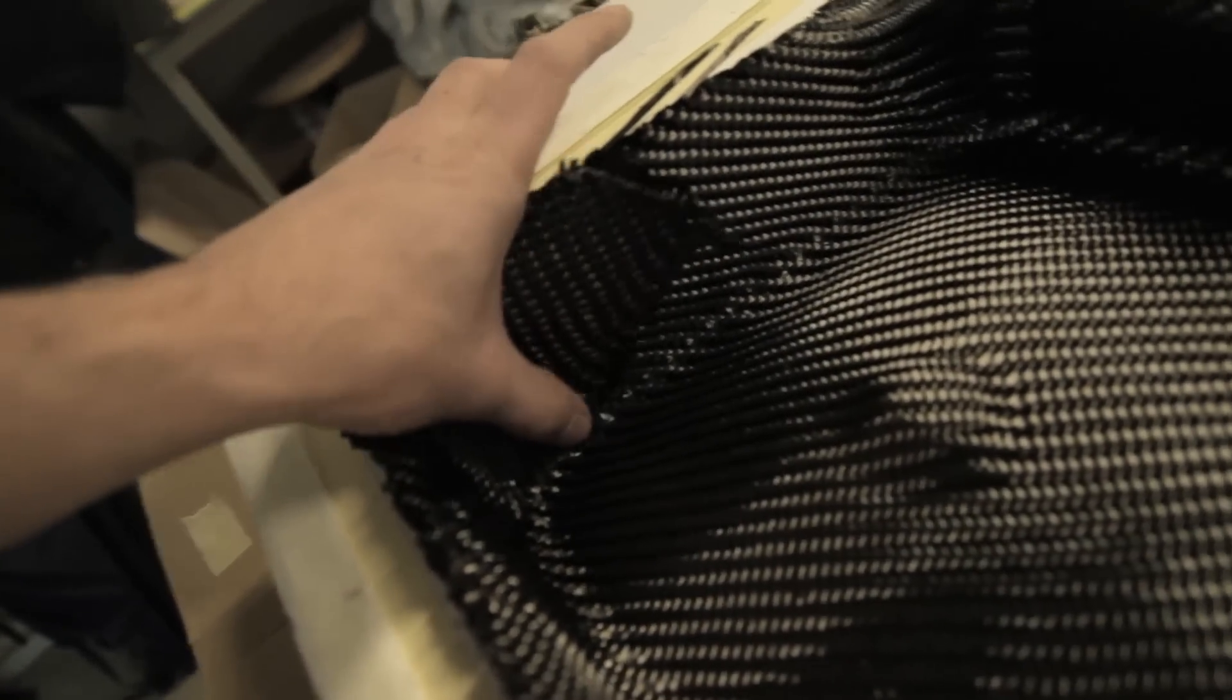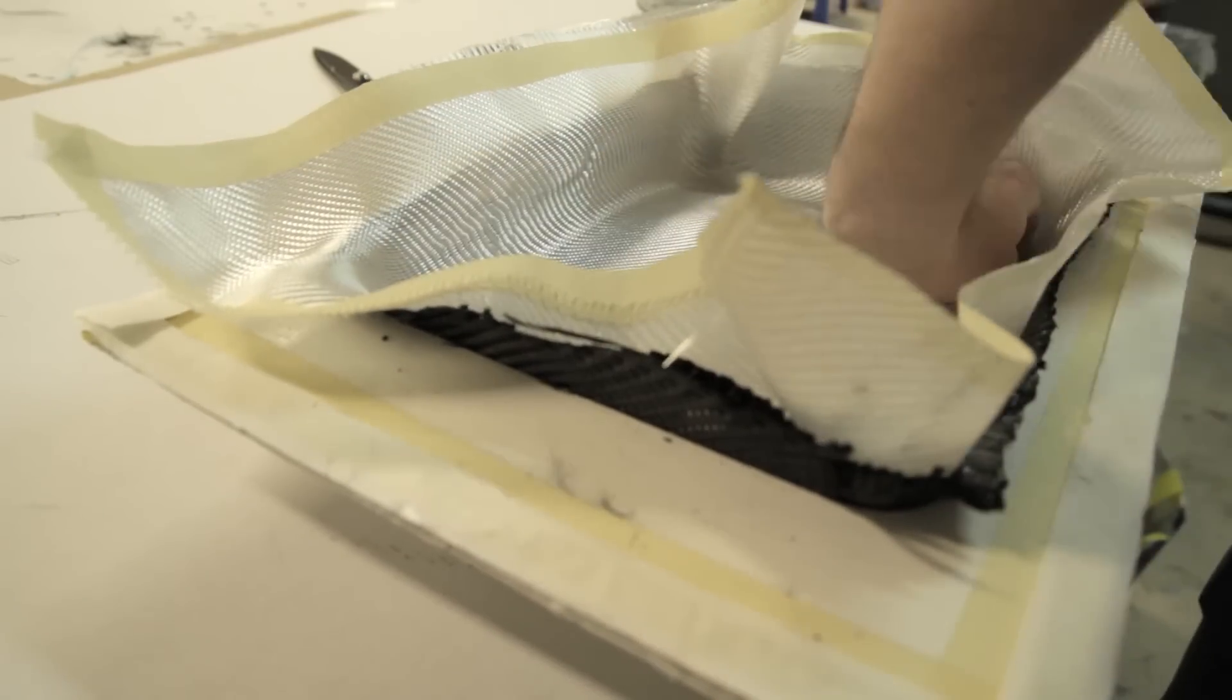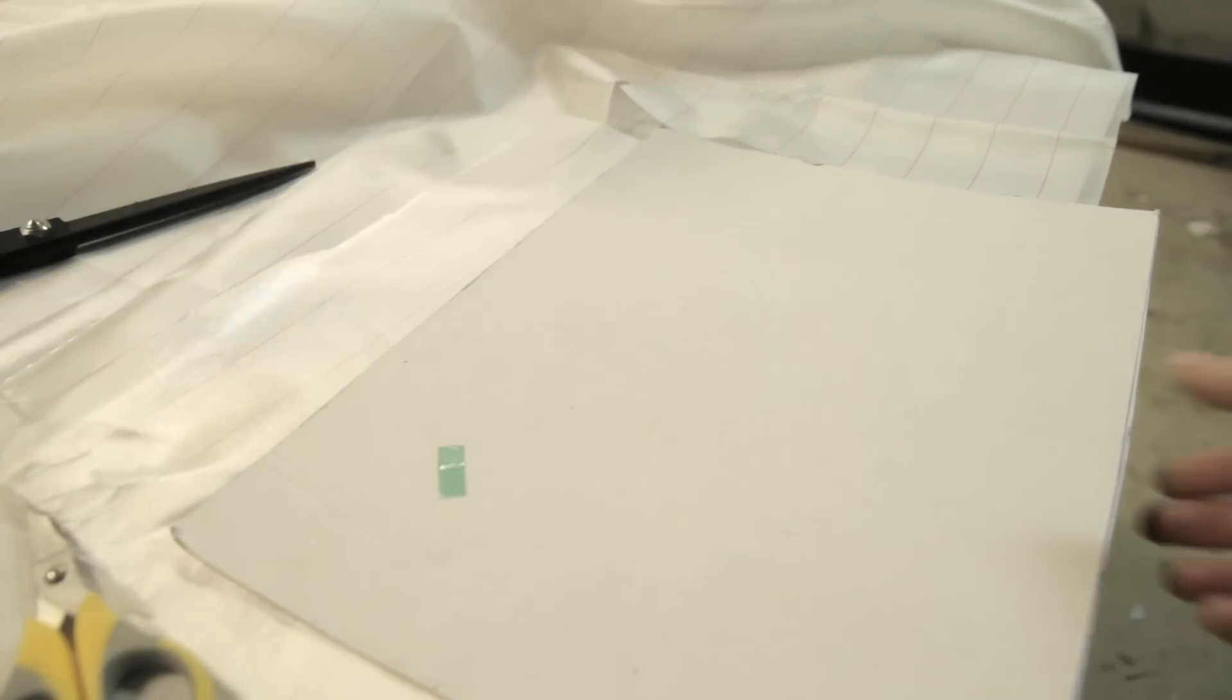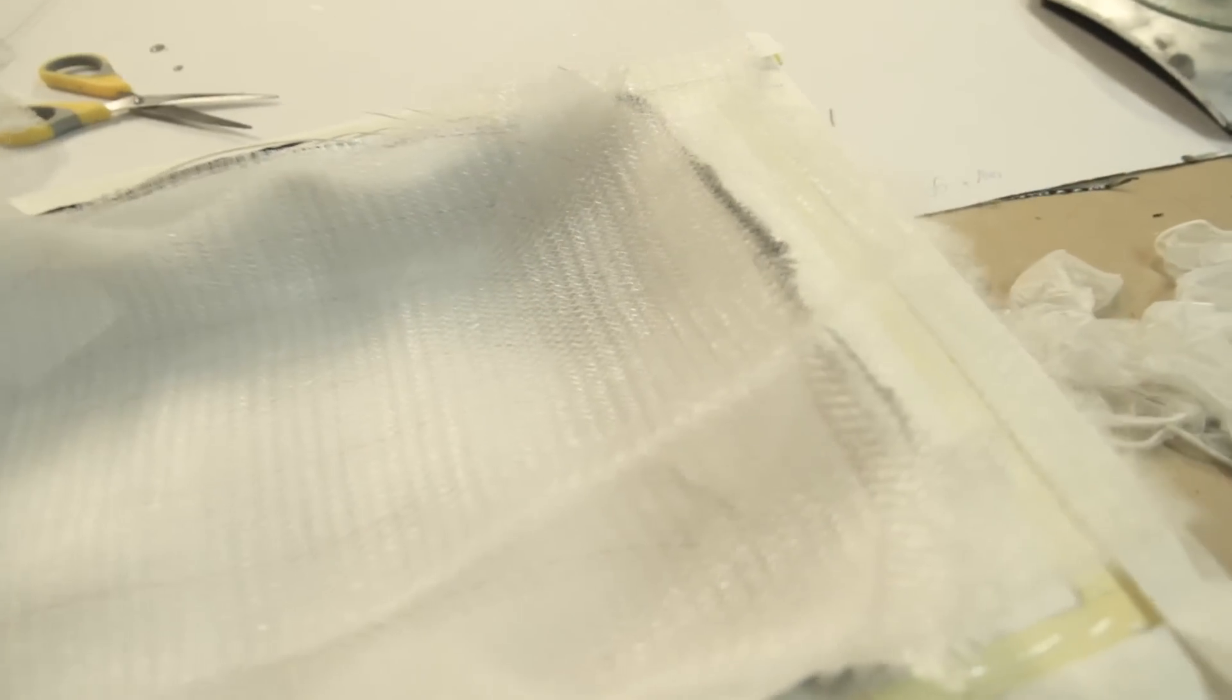I've just had to cut some pleats out. Here's some overlapping. Now I'm backing everything with a 200 gram per square meter fiberglass twill weave as well.